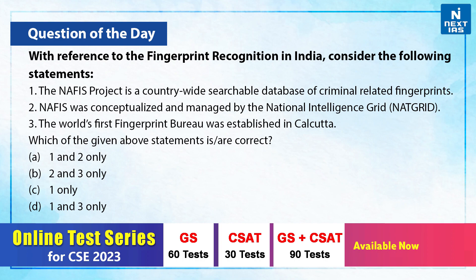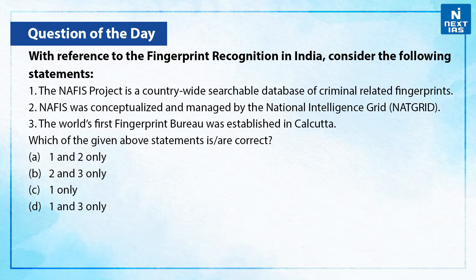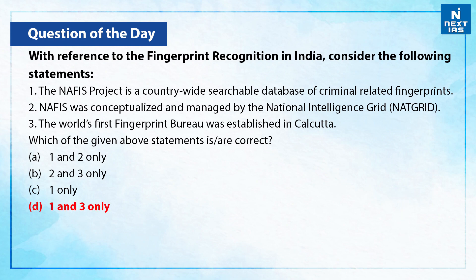Let us take up one practice question. With reference to fingerprint recognition in India, consider the following statements. First, the NAFIS project is a countrywide searchable database of criminal-related fingerprints. Second, NAFIS was conceptualized and managed by the National Intelligence Grid. Third, the world's first fingerprint bureau was established in Calcutta. Which of the above statements are correct? The correct answer is D — only the first and third statements are correct. The second statement is wrong; NAFIS was conceptualized and managed by the NCRB, i.e. the National Crime Records Bureau.